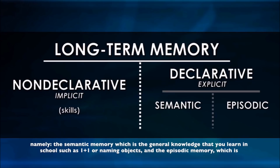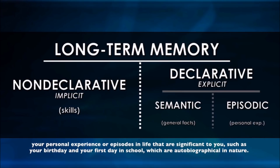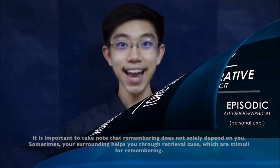The declarative memory is divided into semantic memory, which is general knowledge you learn in school such as 1+1 or naming objects, and episodic memory, which is your personal experience or episodes in life that are significant to you — such as your birthday and your first day in school — which are autobiographical in nature.